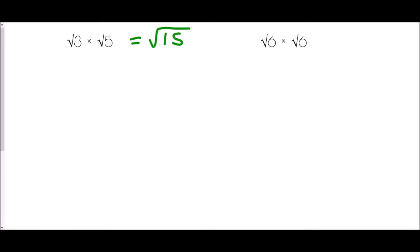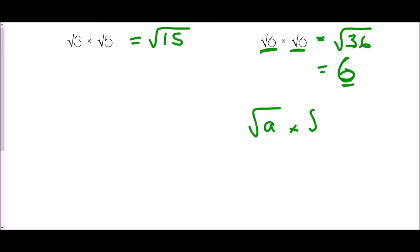Root 6 times root 6 — well that's going to be 6 times 6 which is 36, so root 36. Now this one is quite a special one. Root 36 — we actually know the answer: the square root of 36 is 6. So that's shown us another special rule about surds: a surd multiplied by itself creates just the number under the square root sign. So root a times root a equals a.